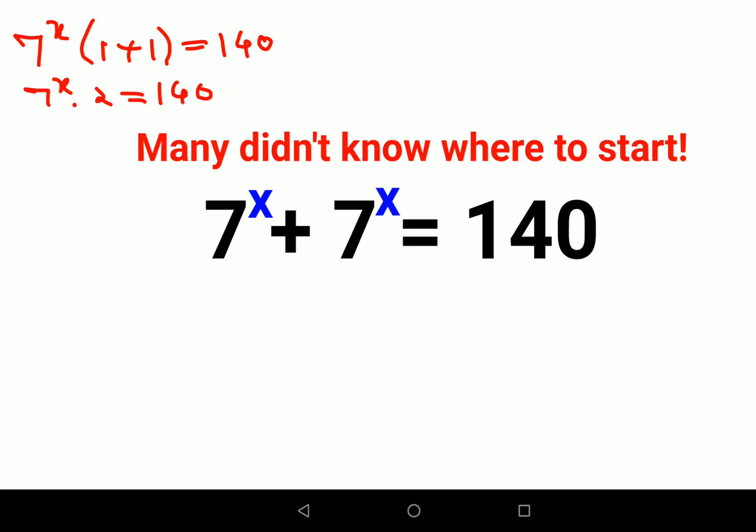Now whenever you want to find the value of the variable, you divide or keep all the numbers on one side. So basically you will divide by 2 on both sides. So now you are left with 7 raised to x equals to 70.